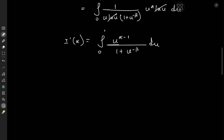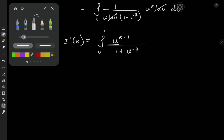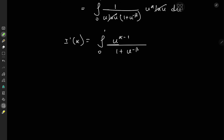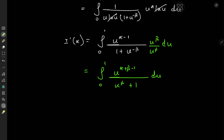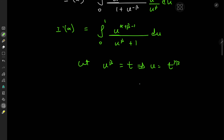There's one more transformation I'd like to do — rather, an expansion. I can expand using the multiplicative inverse of u to the negative beta, using u to the beta. So we have the integral from 0 to 1 of u to the alpha plus beta minus 1 over u to the beta plus 1 du. Now one more transformation is in order: I'll let u to the beta equal t, or u equals t to the 1 over beta, which implies du equals 1 over beta times t to the 1 over beta minus 1 dt, and the limits of integration are clearly unchanged.